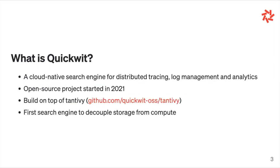Today we're not going to talk about data warehousing — we're going to talk about search engines. Specifically, the novel architecture that QuickWit uses to offer a cloud-native search engine for distributed tracing, log management, and analytics. In general, QuickWit is a good fit for everything that's immutable. So when you think about immutable data, obviously you think about logs, but it can be any events that once sent are not modified. You can also think about emails, text, or conversation data — all really good use cases for QuickWit.